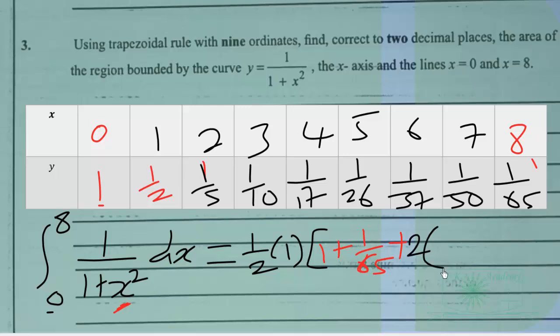So the remaining values of y are 1 over 2 plus 1 over 5 plus 1 over 10 plus 1 over 17 plus 1 over 26 plus 1 over 37 plus 1 over 50.